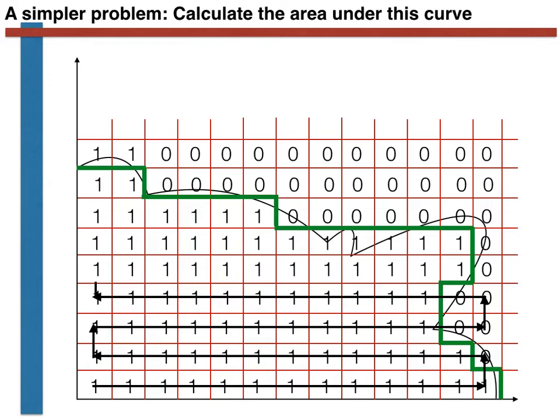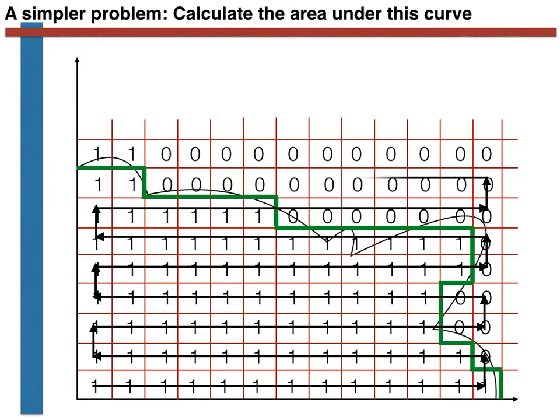Furthermore, we can express this process of adding together all these numbers mathematically using summation notation. In the expression shown at the top right of this slide, the sum runs over all the grid points, and the s_i values are the 1s and 0s that tell us whether or not these points are under the green line or not.